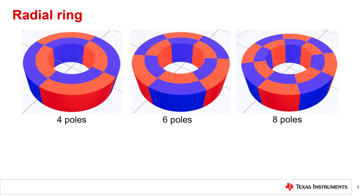When increasing the amount of poles in the ring magnet type in TIMS, the tool will generate a radial ring magnet.